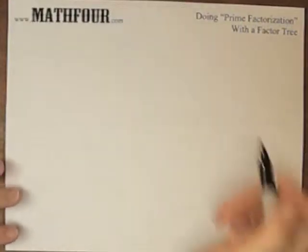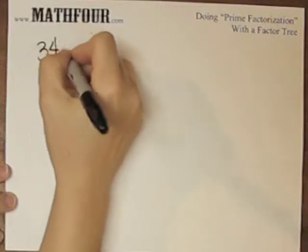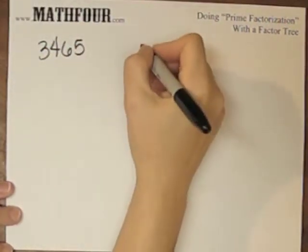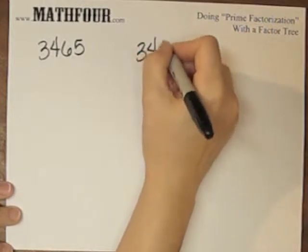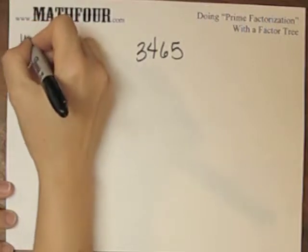Here's another example of prime factorization using a factor tree. I'm going to use the number 3465, and to factor it with the factor tree, I write it in the middle.